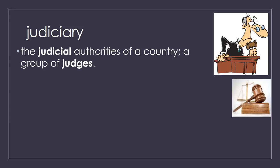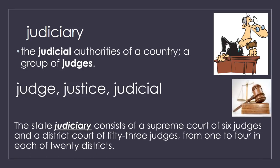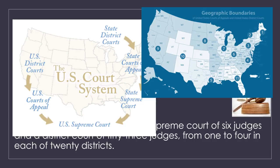Judiciary — the judicial authorities of a country, or a group of judges. Related words include judge, justice, and judicial. The state judiciary consists of a supreme court of six judges and a district court of 53 judges, from one to four in each of the 20 districts. If there's a crime or disagreement, you can take it to court and the judiciary system will determine whose side is dealt fairly or unfairly. Each area on the map has a different major court from the federal government, and each state has its own judiciary system.